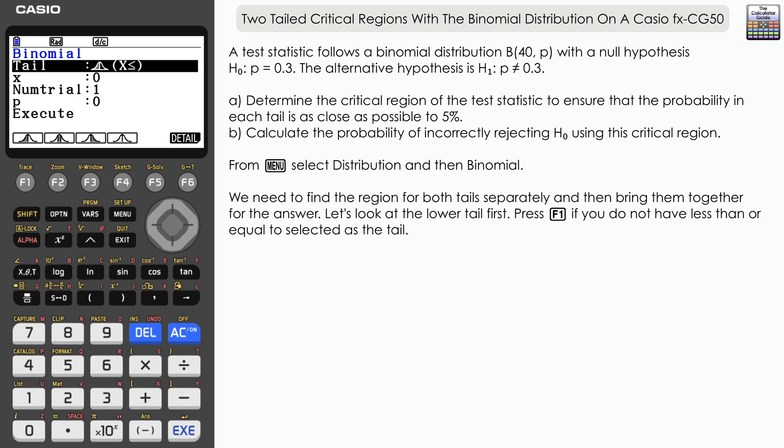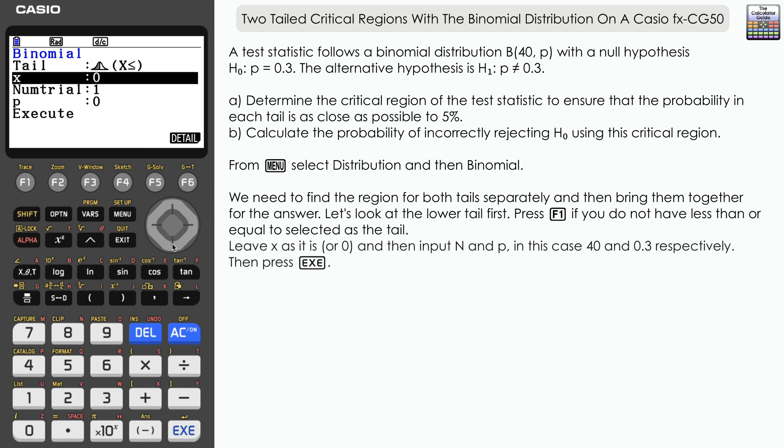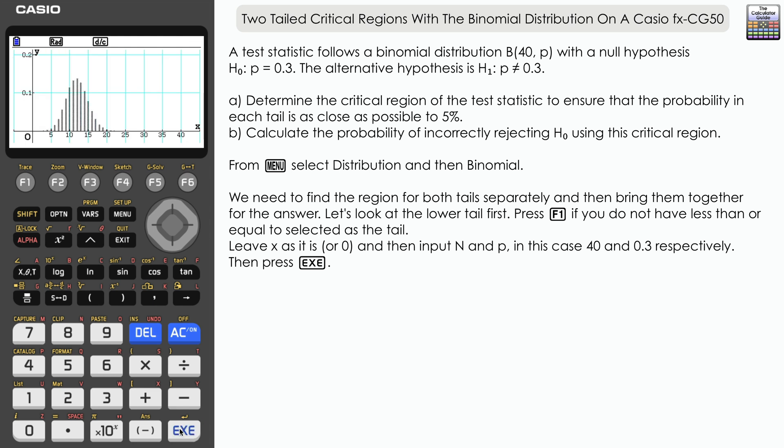We're going to start with the lower tail. If it's not on by default, press F1 to select Tail. Scrolling down, we'll leave x as default for now—we'll change that within the distribution. Number of trials is 40, and p we'll assume is correct from H₀, so that's 0.3. Then press Execute to finish.